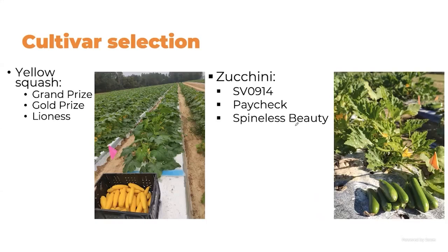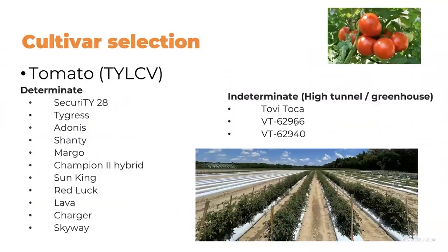For tomatoes in the fall season, the major problem is Tomato Yellow Leaf Curl Virus (TYLCV). There are several resistant varieties available for both determinate and indeterminate tomatoes. Selecting the correct resistant variety is the first step for growers, combined with appropriate planting dates.